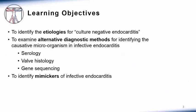The learning objectives for this module are to identify the etiologies for culture-negative endocarditis, to examine alternative diagnostic methods for identifying the causative microorganism in infective endocarditis. These include serologies, valve histology, and gene sequencing. And finally, to identify mimickers of infective endocarditis.